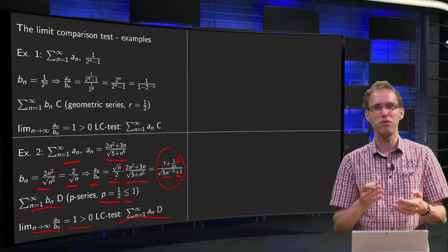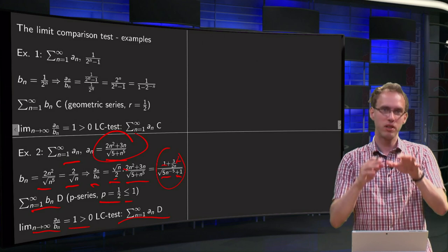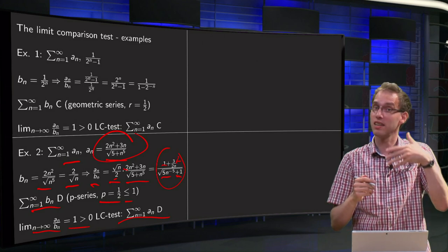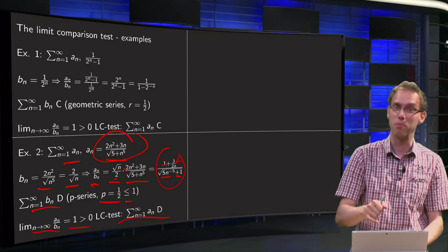And we know that our series of the an is divergent as well. You may think that we needed to do a lot of work, but look, the an looked really awkward, and we still needed only a few lines, and the limit comparison test already works. It really works like a charm, doesn't it?